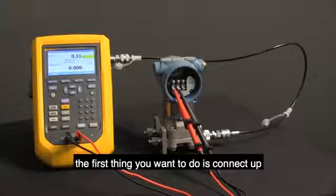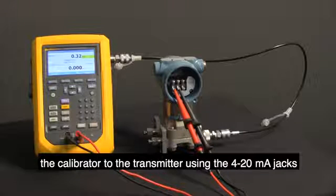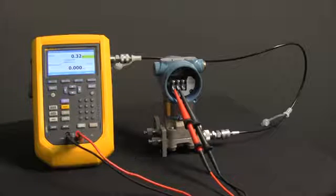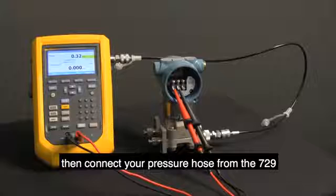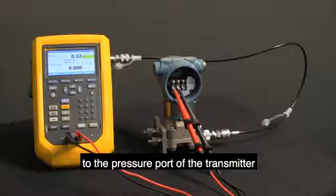The first thing you want to do is connect the calibrator to the transmitter using the 4 to 20 milliamp jacks, going to the plus and minus on the transmitter. Then connect your pressure hose from the 729 to the pressure port of the transmitter.